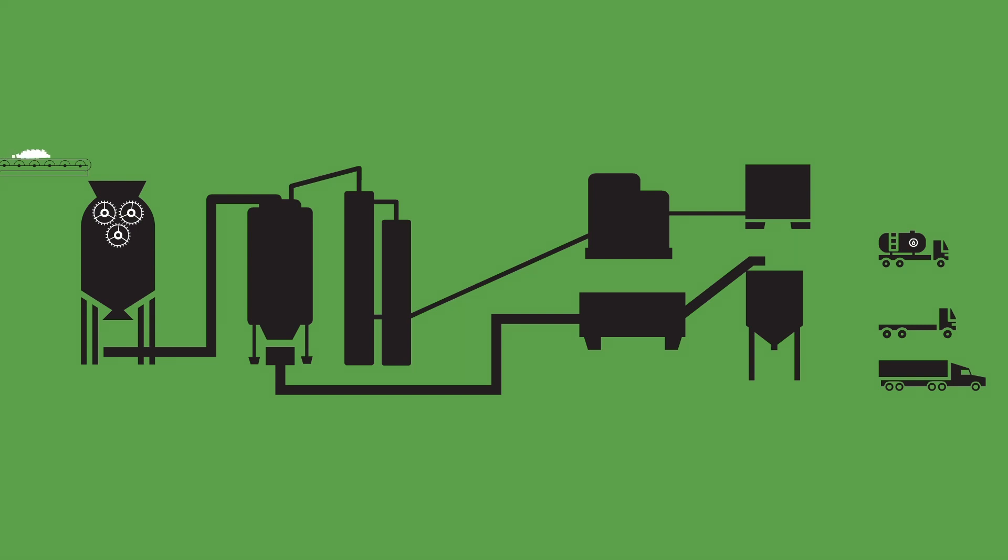The primary shredded tires are then run through your facility's secondary shredder, removing the fiber and steel, preparing the processed tire feedstock for pyrolysis.